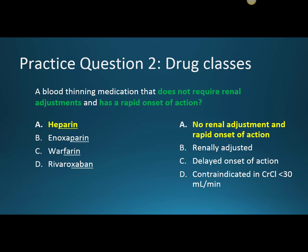That's going to be A, heparin. So no renal adjustments are necessary with heparin, and this does have a rapid onset of action. Our enoxaparin and our rivaroxaban are both going to need renal adjustments, and specifically our rivaroxaban, our Xa inhibitor, is going to be contraindicated in patients that have severe renal dysfunction. Both warfarin and heparin do not require renal adjustments. However, warfarin has a delayed onset of action and it can take several days until it can reach its maximum effects. So that is why A is correct in this question.